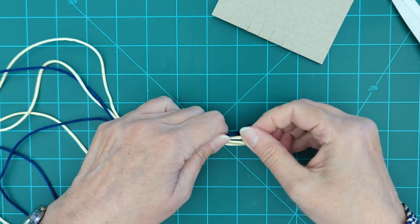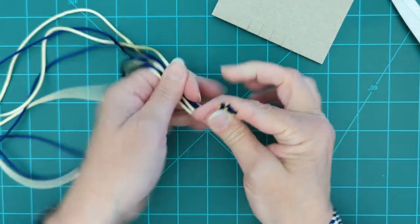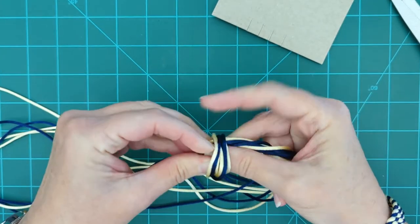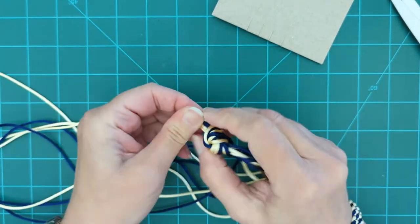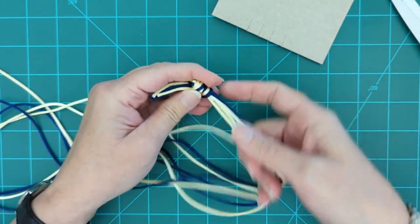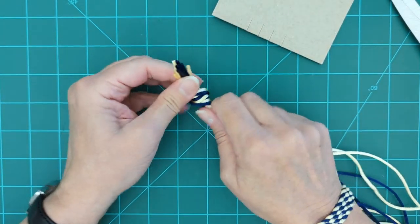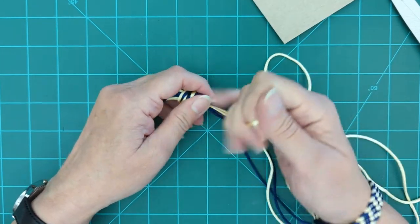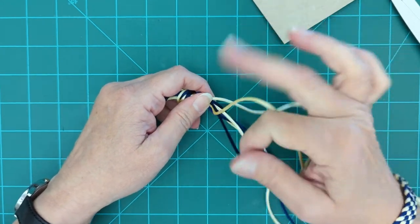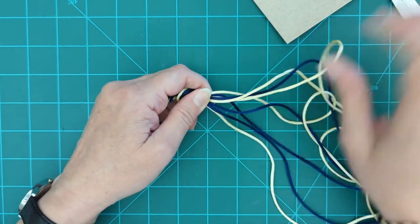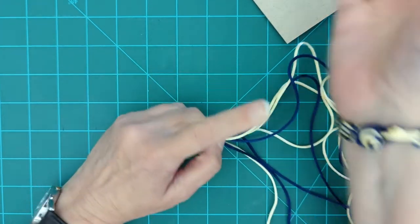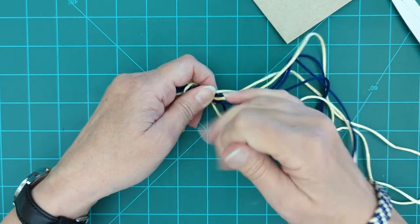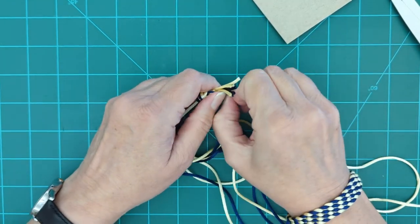Then with all my ends together, I'm going to put a knot right at the end here. Now rat tail is shiny and it's slippery, so knots don't hold real well unless you make them really tight. So you're going to want to pull on each individual cord as hard as you can because you want this knot to be tight because it's going to be part of your clasp.